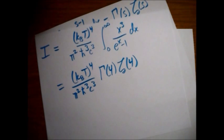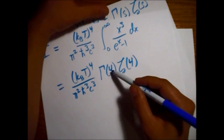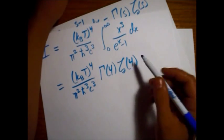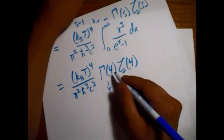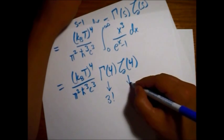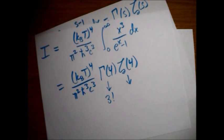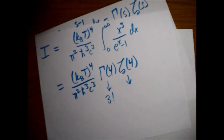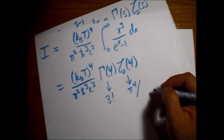All right. So for a nice integer value, we don't have to look this up. So for a gamma function, it's just four minus one factorial, so a three factorial. And then Griffith gives us the zeta function, in this case, as pi to the four over 90.